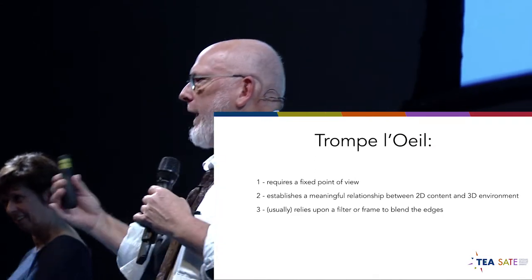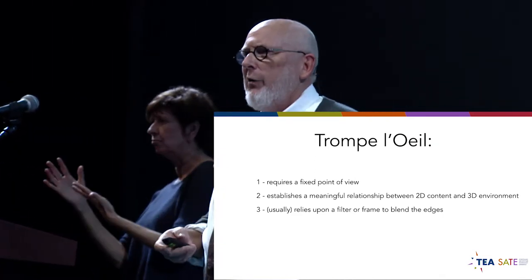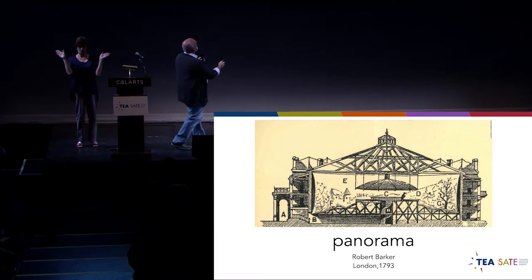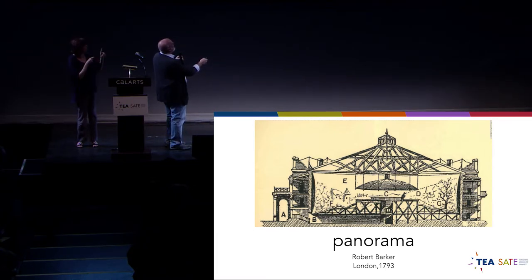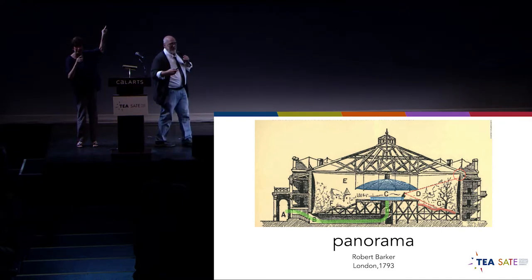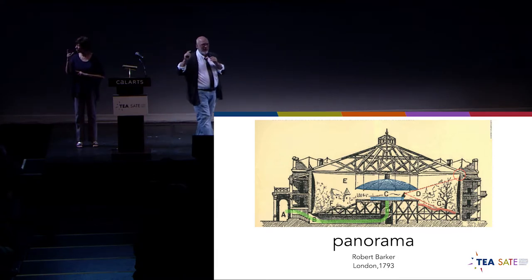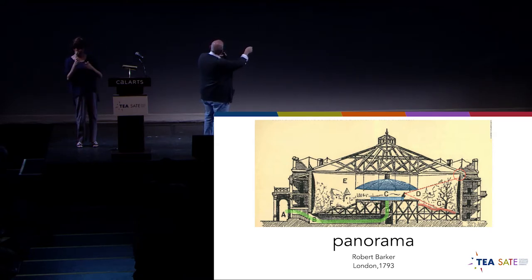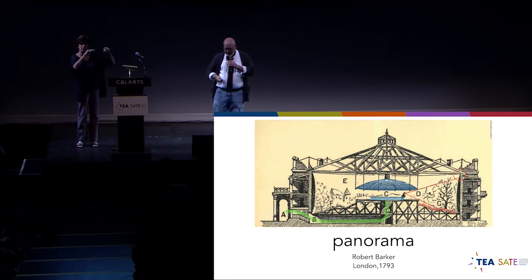Trompe l'oeil is one of these techniques from history we continue to use. It requires a fixed point of view — you can't change it or the whole illusion gets shattered. The next technique comes from the panorama, which is an extraordinarily well-designed structure. The point of view is controlled by a railing and canopy, so you never see the seam between the backdrop and the structure. The frame has been removed, which heightens the illusion. It also has a pre-show — a dark hallway — that transitionary space. This is 1793 — you go through the dark space and come up into a completely transformed world.